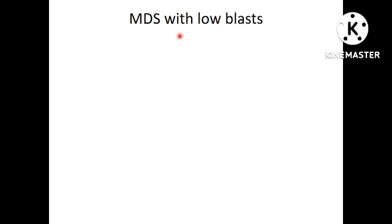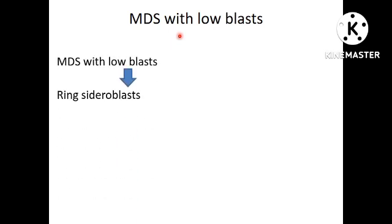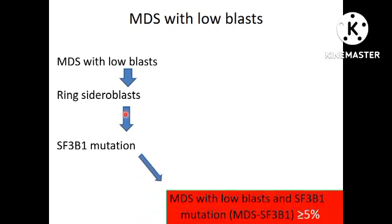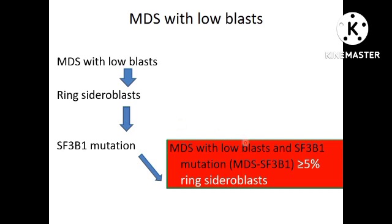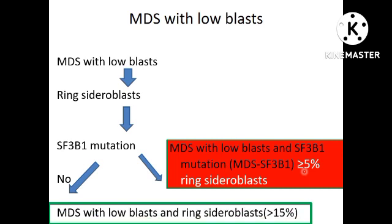In another case scenario, you have a morphological diagnosis of MDS with low blast and you are also seeing ring sideroblasts. The first step is to look for SF3B1 mutation by NGS. If you find SF3B1 mutation, this category becomes MDS with low blast and SF3B1 mutation — the cutoff for ring sideroblasts here is ≥5%. If you do not have SF3B1 mutation, call it MDS with low blast and ring sideroblasts, with a cutoff of ≥15%. On cytogenetics, you should not have 5Q deletion, 7Q deletion, or monosomy 7.